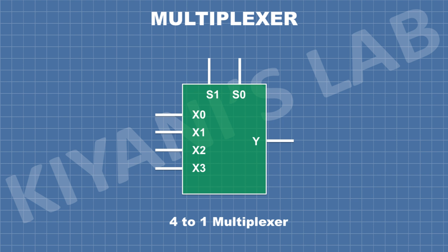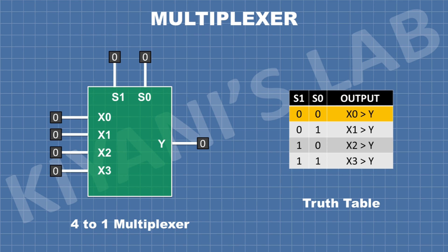Now let's see how this 4-to-1 multiplexer works. When select line S0 and S1 both are 0, the input X0 is selected.